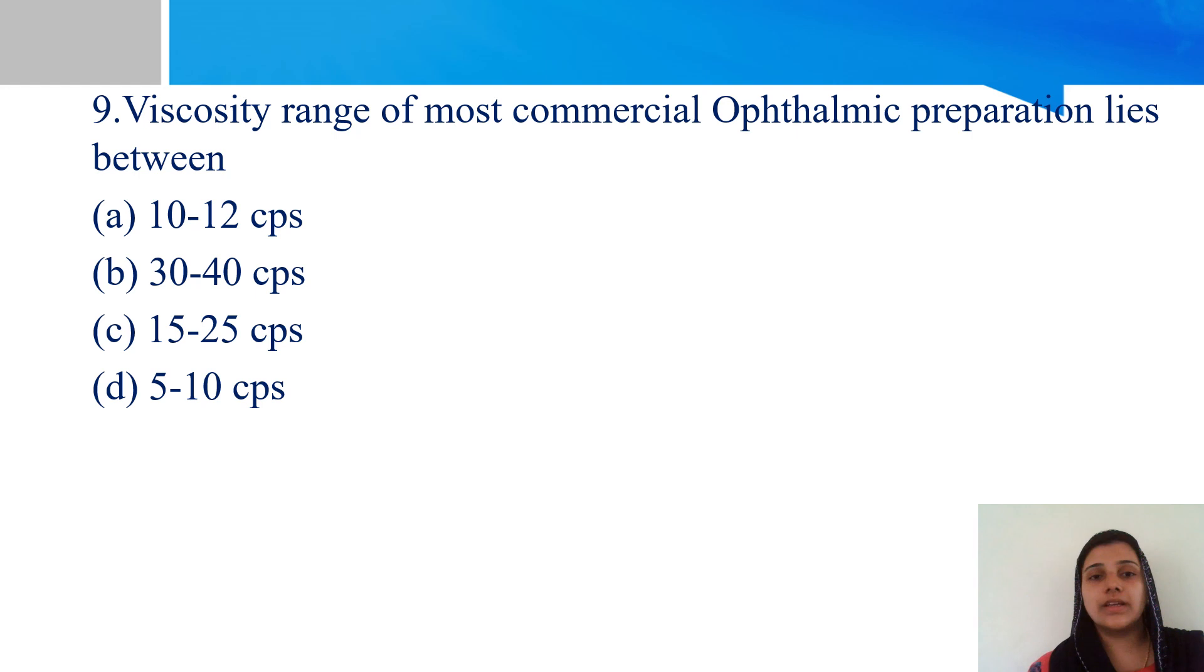Ninth question. Viscosity range of most commercial ophthalmic preparation lies between 10 to 12 CPS, 30 to 40 CPS, 15 to 25 CPS, or 5 to 10 CPS.